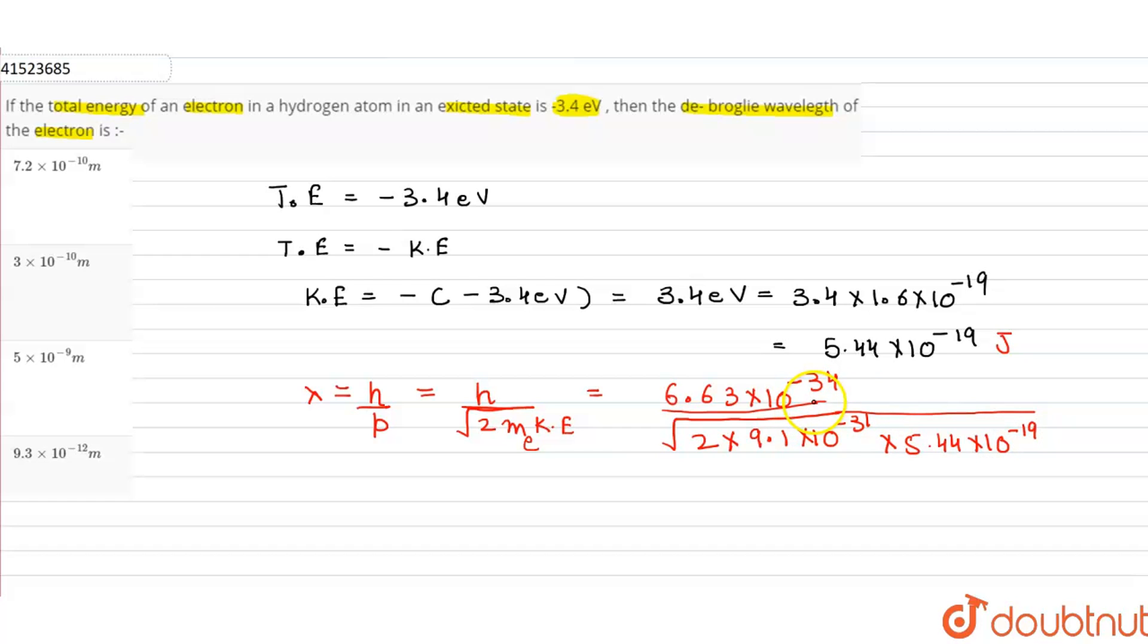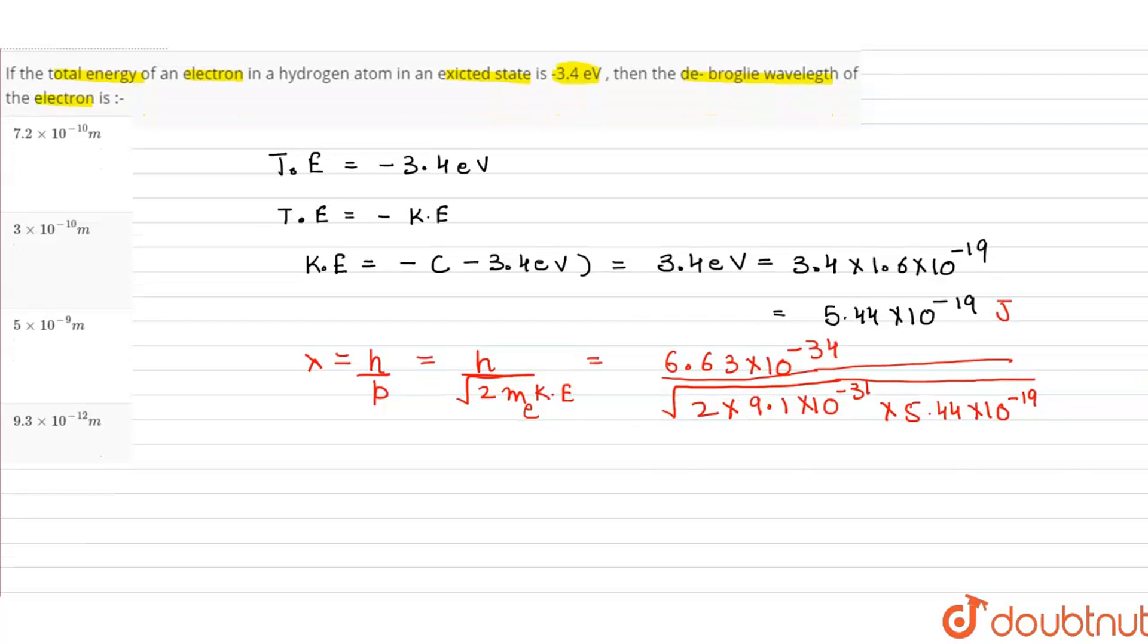This will be under the square root. Now, we write the expression: 6.63 times 10 to the power minus 34 over square root of 99.008 times 10 to the power minus 50.